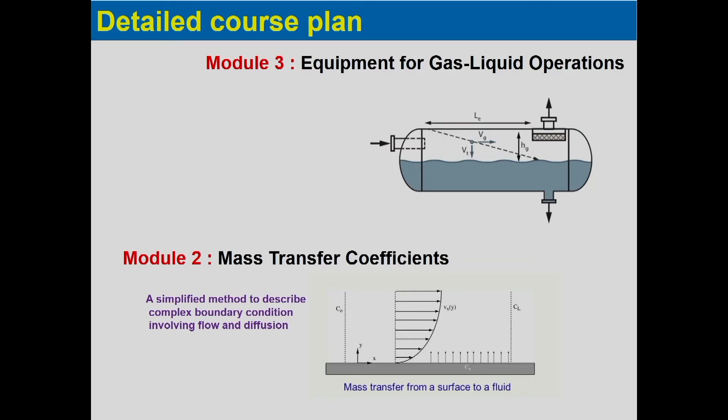Module 3 will consider the equipment for gas-liquid operations. There are many fundamental equipment which are used at lab scale, and then based on the data from the lab scale, we design the industrial scale equipment. We will discuss both the laboratory scale equipment as well as the industrial equipment in module 3.